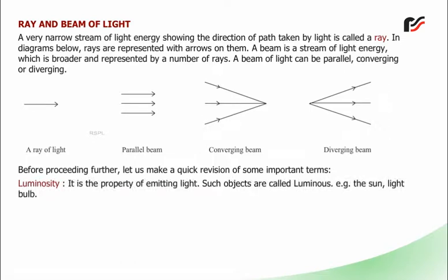Luminosity: It is the property of emitting light. Such objects are called luminous, for example, the sun and light bulb.